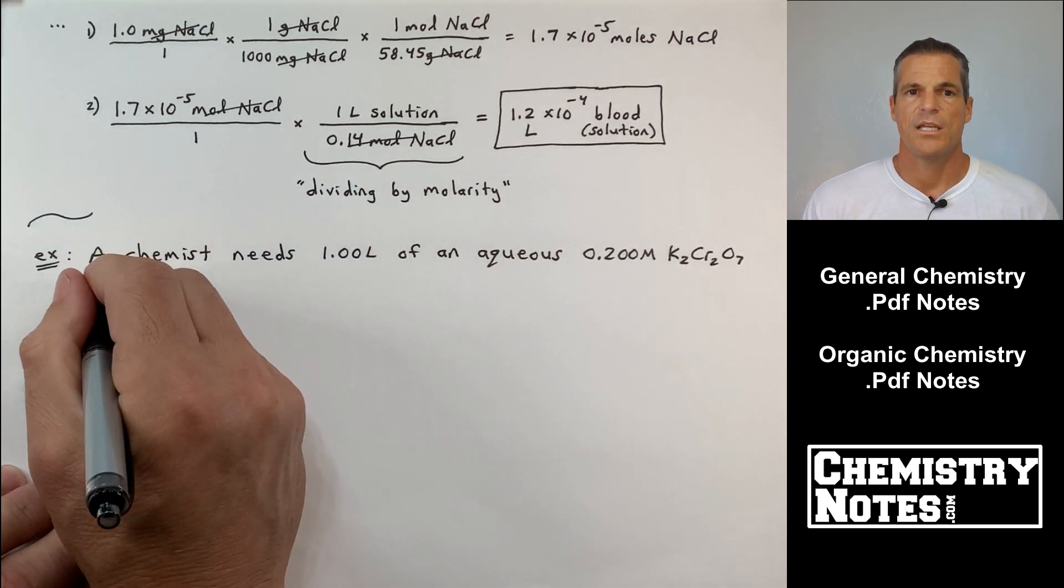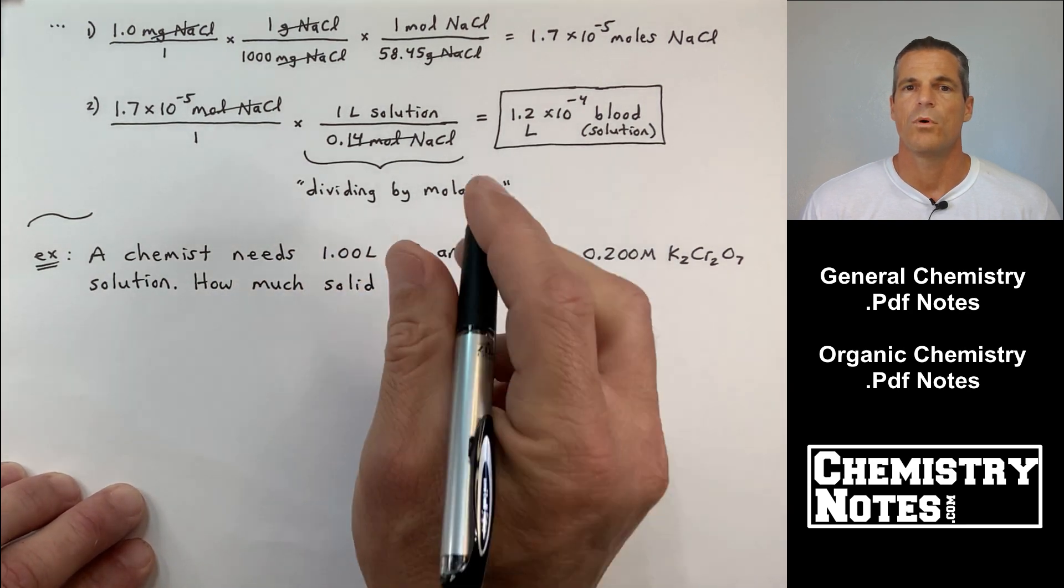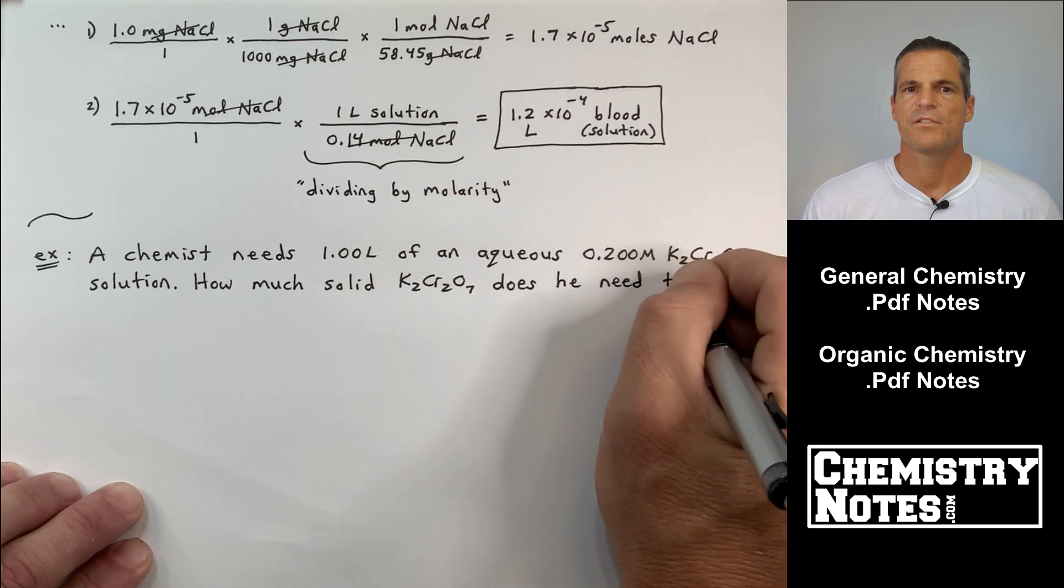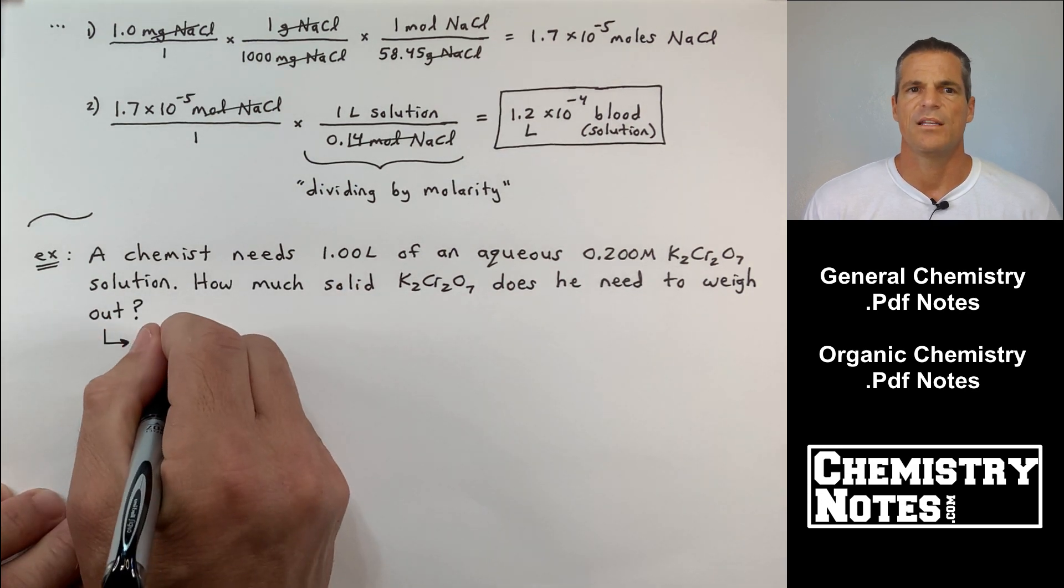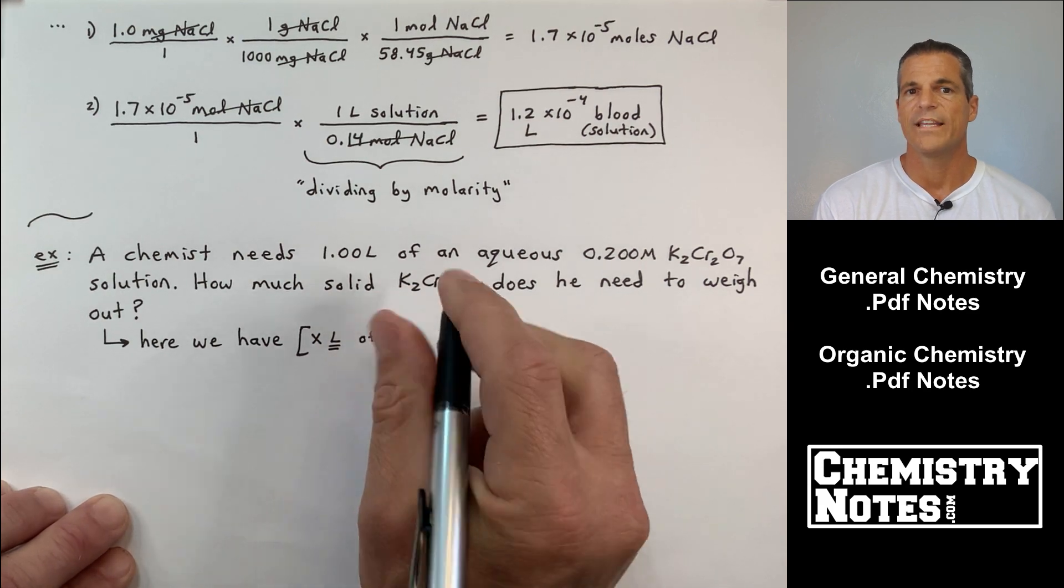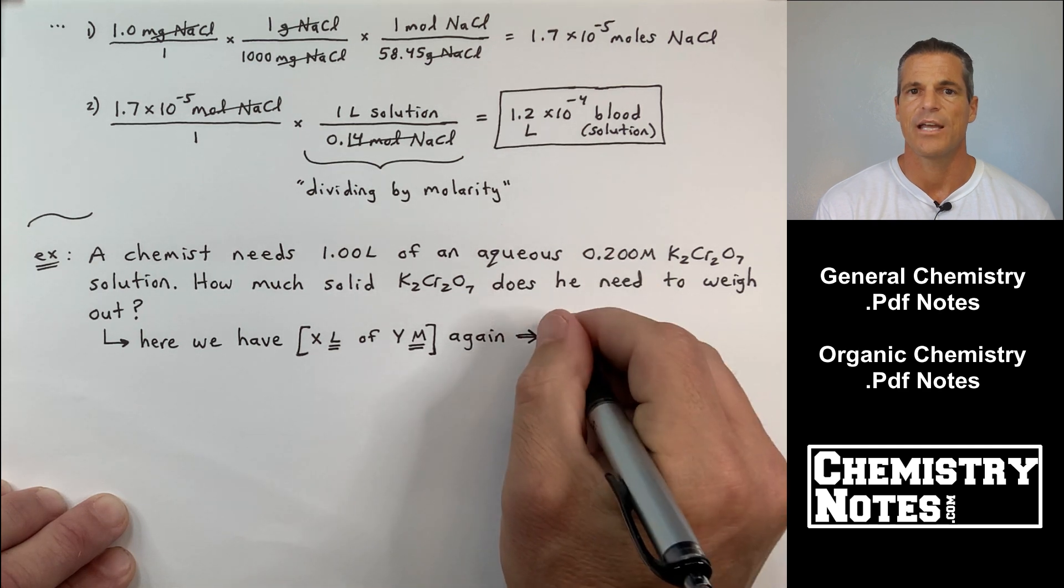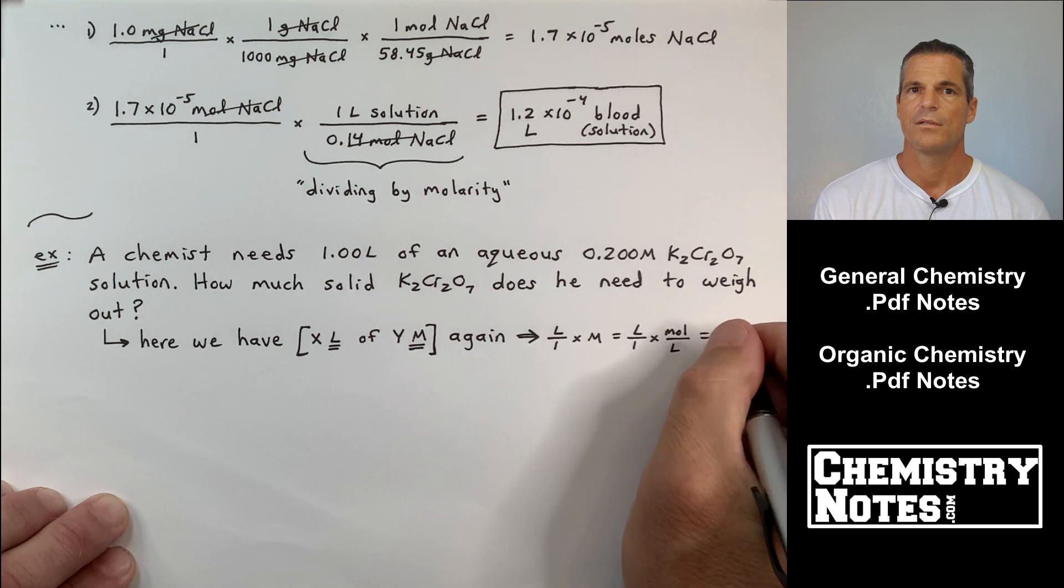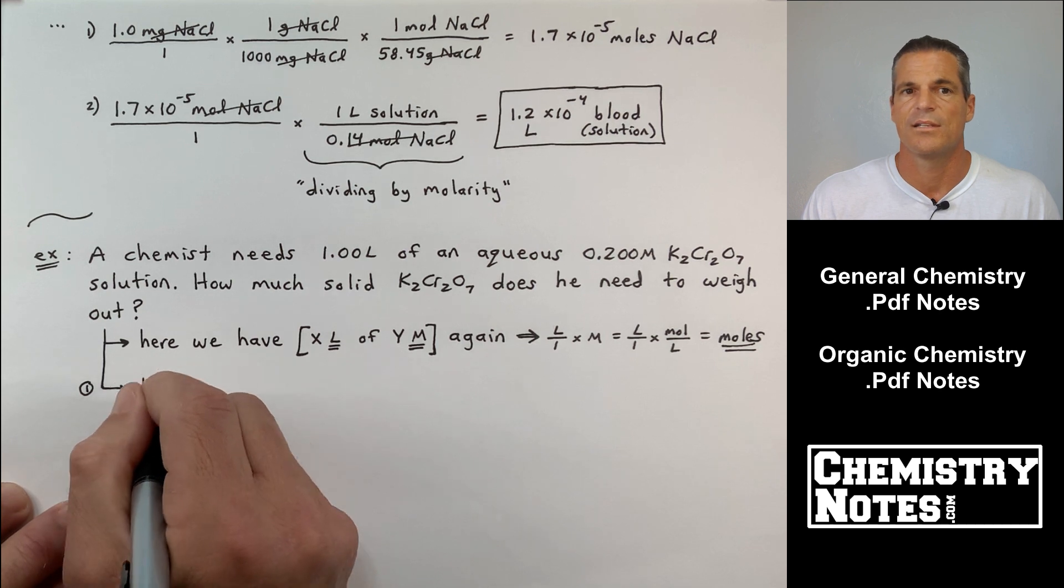Next example. A chemist needs 1.00 liters of an aqueous 0.200 molar potassium dichromate solution. How much solid K2Cr2O7 potassium dichromate does he need to weigh out? Well, you see this? 1 liter of and then the molarity. If we multiply those two together, liter times molarity is a liter times a mole per liter, we get moles. Once we're in moles, we can go to grams really easily using the periodic table in molar masses. That's our plan.